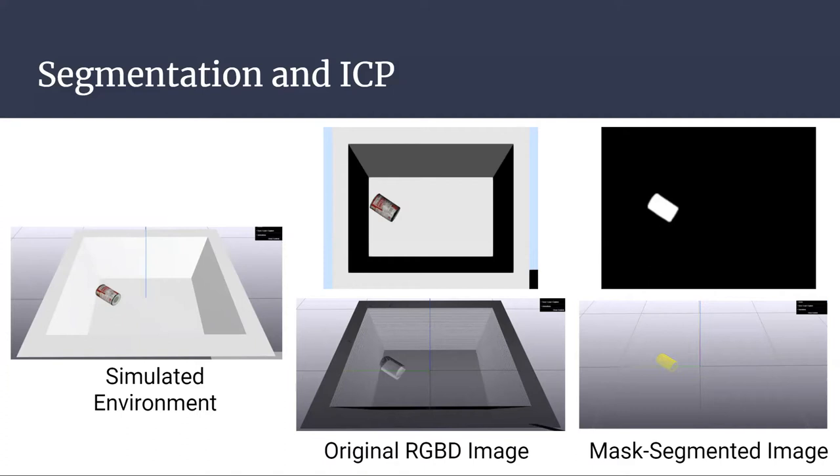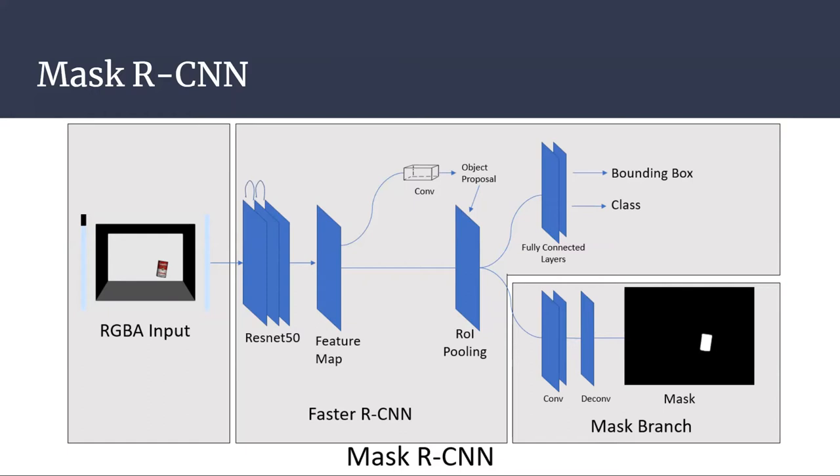The Mask R-CNN architecture is largely built on top of the Faster R-CNN architecture with an extra branch at the end to compute the mask. We use PyTorch's implementation of Mask R-CNN with a ResNet-50 backbone pre-trained on the COCO dataset. In order to train it for our situation, we simply replace the two head branches with fresh layers and train the whole system on a thousand images from our simulation.